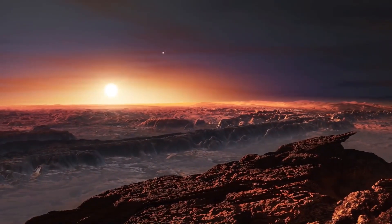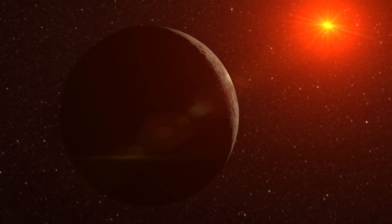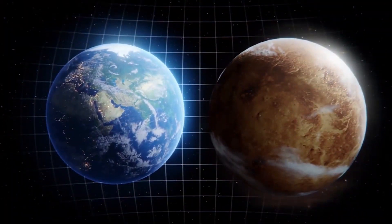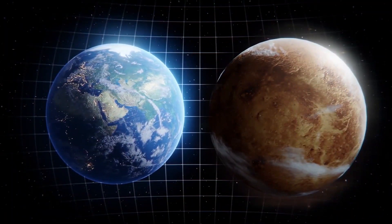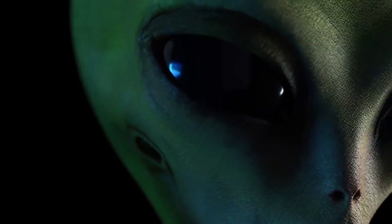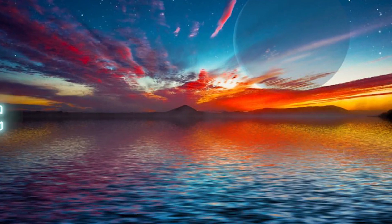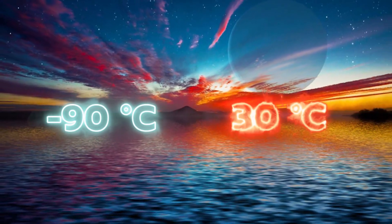Already, scientists have reasons to believe life could exist there as the planet has the following characteristics. Composition: It is rocky and a similar size to Earth. Temperature: It lies in the habitable zone of its star, which means there could be liquid water on its surface, a key ingredient for alien life. The temperature on the surface of the planet could be between minus 90 and 30 degrees Celsius.